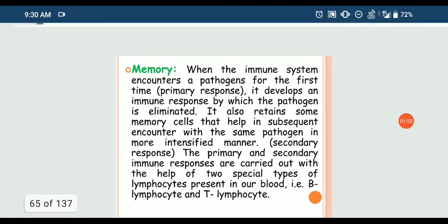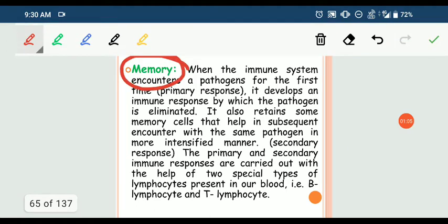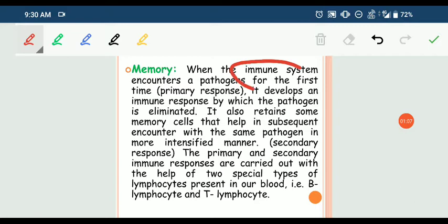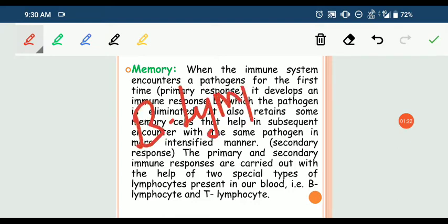The second property is memory. Memory is a very important property in acquired immunity. When the immune system comes into contact with a pathogen, it develops a primary response in which our cells, called B lymphocytes, produce antibodies.